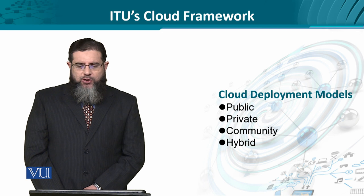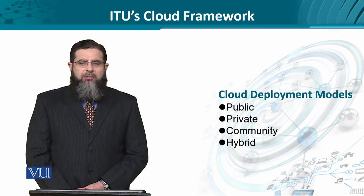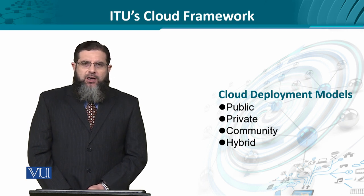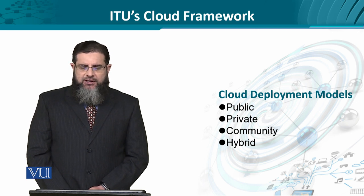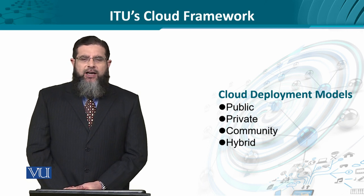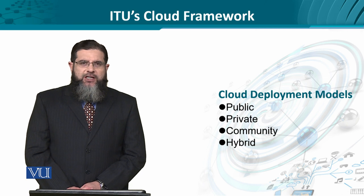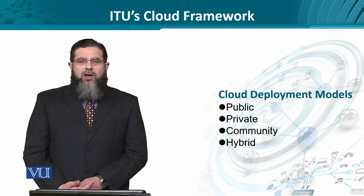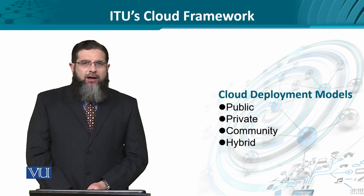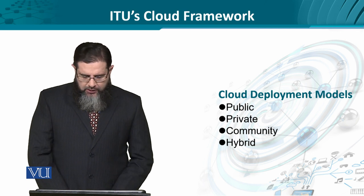The ITU-T framework also defines deployment models. We could have public, private, community, or hybrid clouds. Public clouds are where anyone can subscribe to cloud services — for example, Amazon AWS and Microsoft Azure are available for all of us to access. Private cloud is for a dedicated community, where customers are responsible for maintaining the cloud themselves. Community cloud involves a specific dedicated community such as scientists, researchers, or people working in the mining or automobile sector — an application-specific or business-specific cloud. Hybrid is a combination of any of the above.